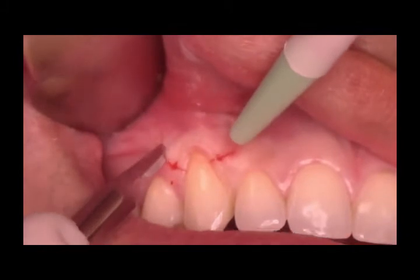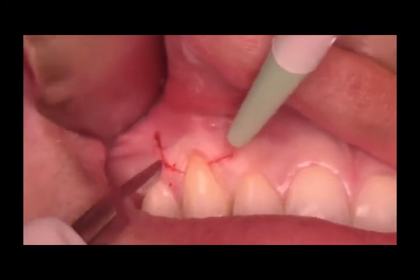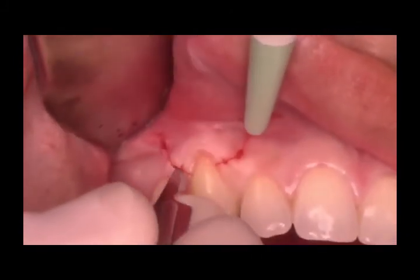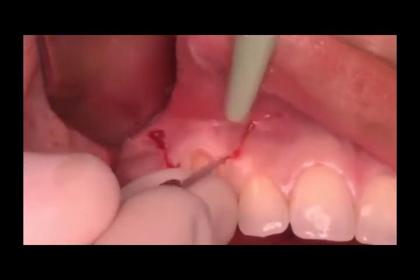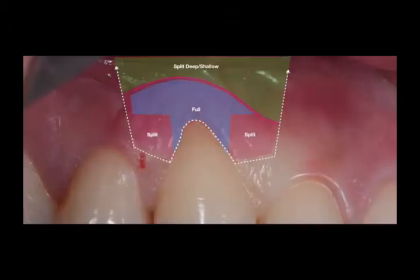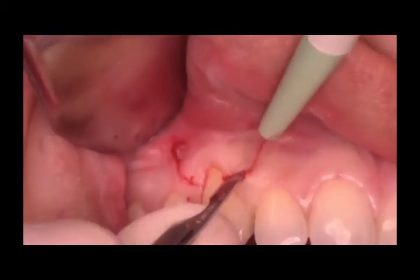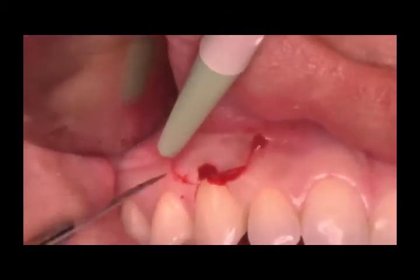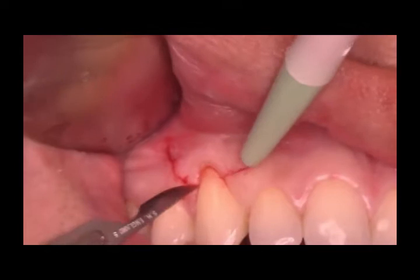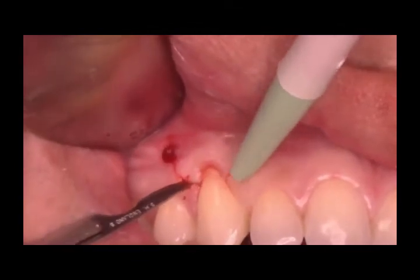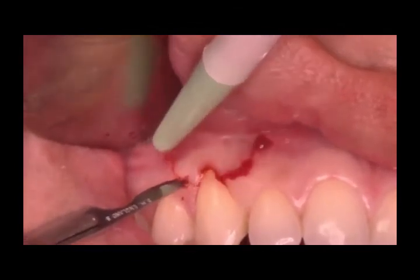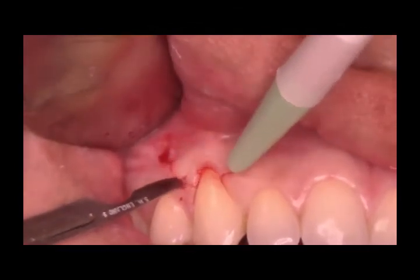This video explains the coronally advanced flap used to treat gingival recession along with the use of a connective tissue graft. Incisions are being placed with the help of a Bard Parker blade. Horizontal, sulcular, and vertical releasing incisions have been given, and a mucoperiosteal flap will be raised.